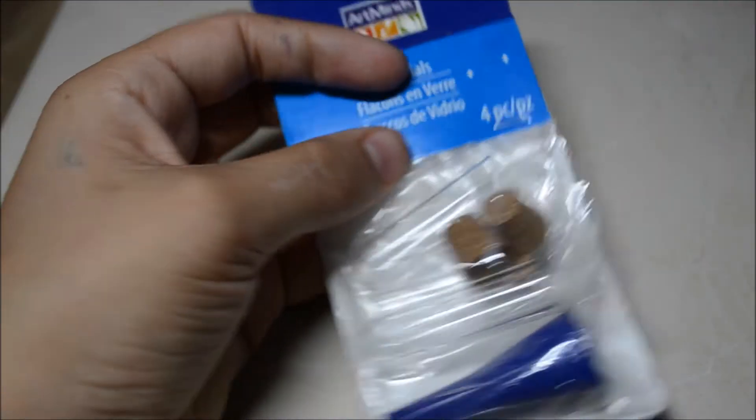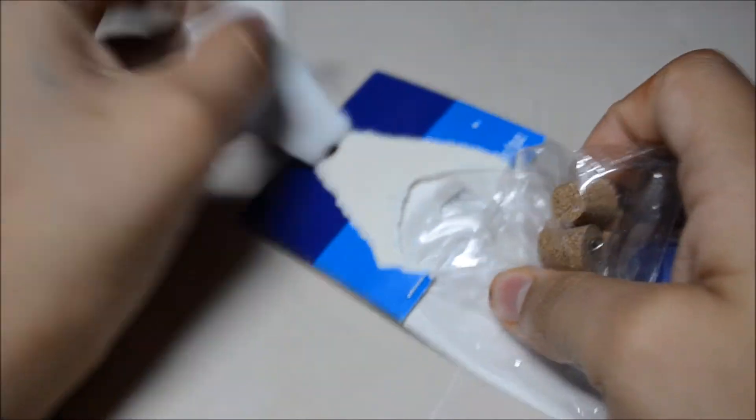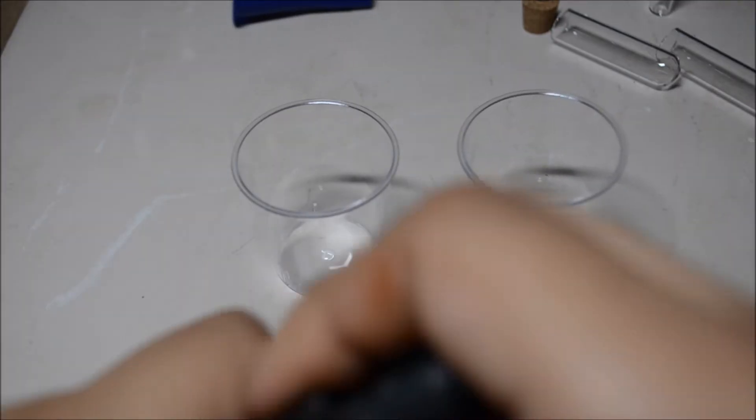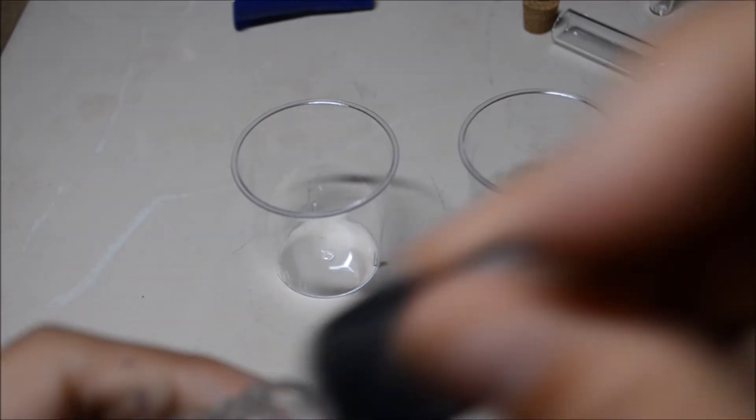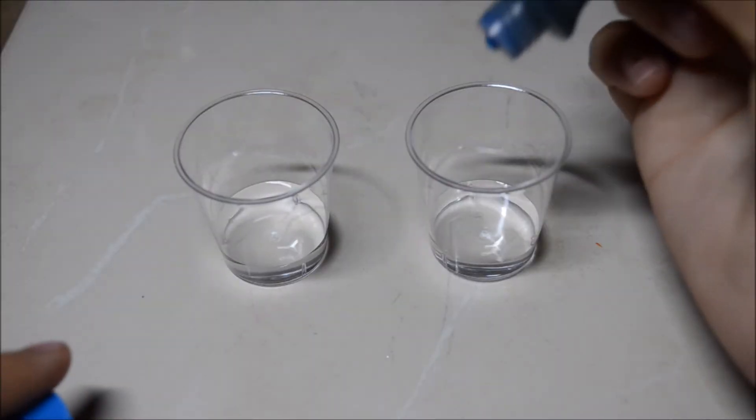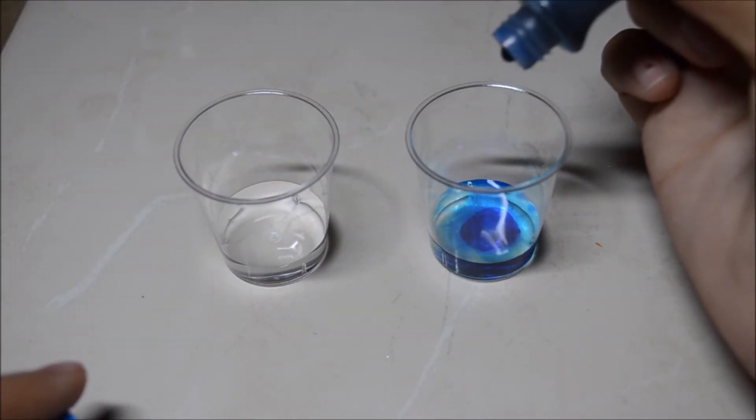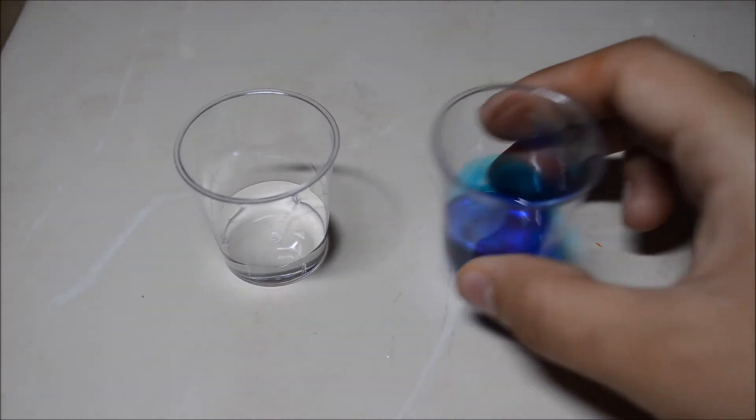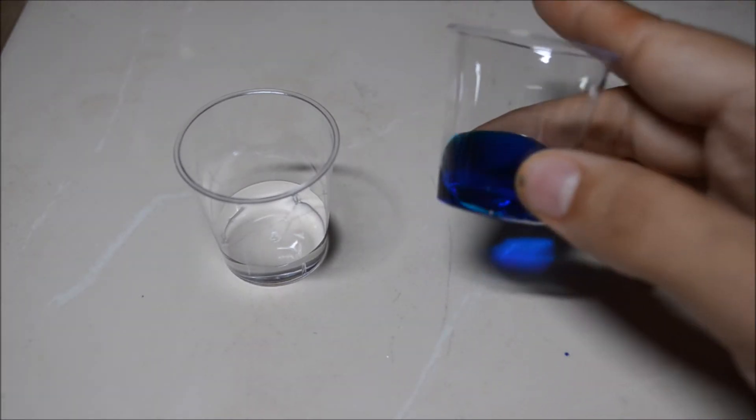Take out the vials from their packaging, set them aside. Get your little containers, fill them with equal amounts of water. Then add the food coloring - add as many drops as you want. I added two but you could add more.